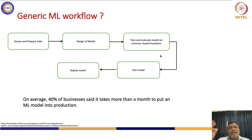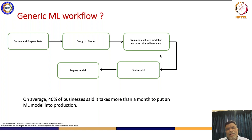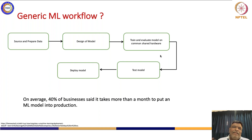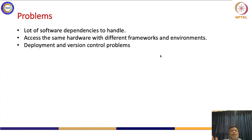Once you are able to do training and evaluation of the model on common hardware, you need to test that model and then deploy it. This is a generic machine learning workflow, and on average 40 percent of businesses said it takes more than a month to put an ML model into production. Given this scenario, how are we going to optimize our delivery to put any ML model into production with less effort?